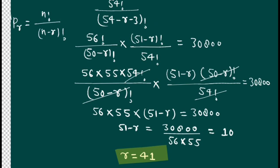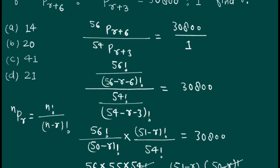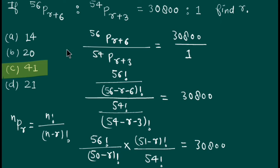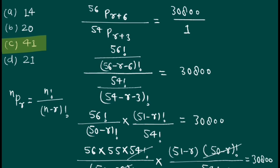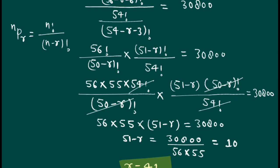From here, r equals 51 minus 10, so r equals 41. We find the value of r as 41. You can easily see that option C is the right answer: 41. I hope you understand the video. That's all for today. Thank you for watching, bye bye.